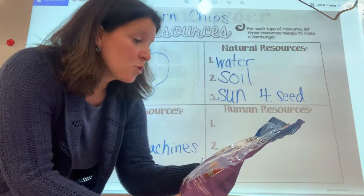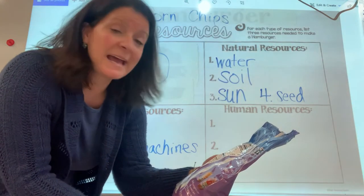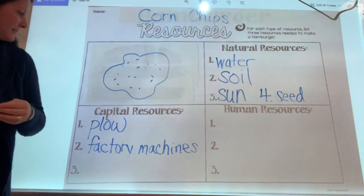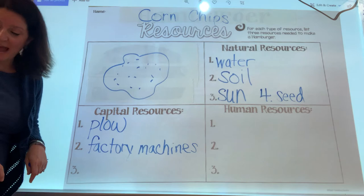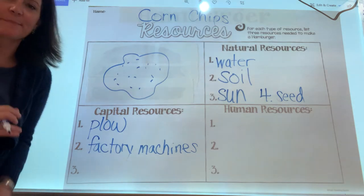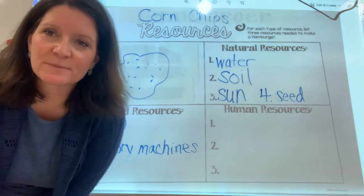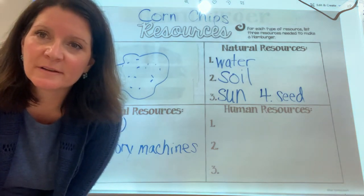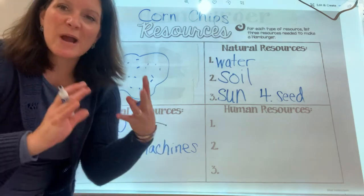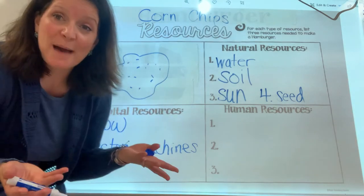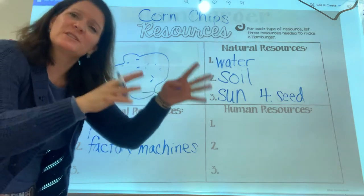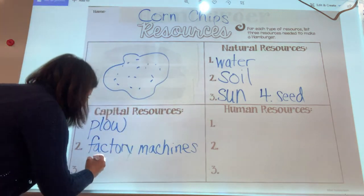Let's look at the ingredients: corn, vegetable oil, and salt. How simple is that? Delicious. Another capital resource — where do you get your chips? Do they just show up at your house? No, you get them at the grocery store. So the grocery store is a capital resource because those things are delivered there and picked up there. So we'll say: the store.